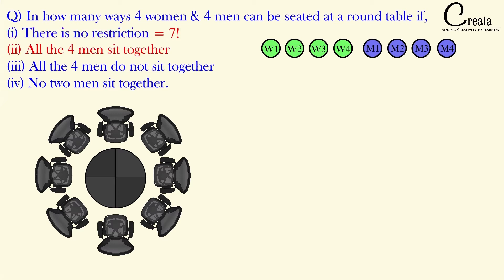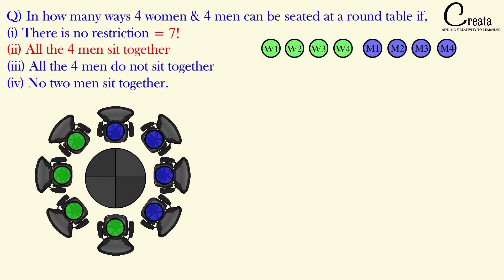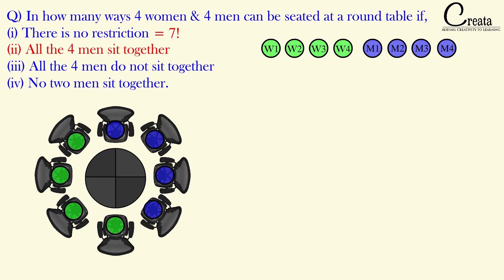Let's check the second part. The condition is that all 4 men must sit together. So we give 4 consecutive slots to the 4 men and the remaining 4 slots to the 4 women. Since this is circular permutation, rotating all slots by one position gives the same arrangement, so all such rotations are considered equivalent.